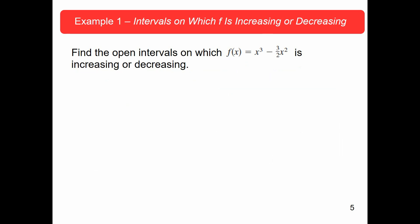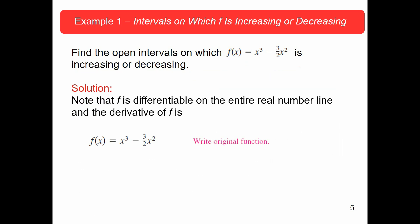What we want to do is find the open intervals on which the function f(x) = x³ − (3/2)x² is increasing or decreasing. Note that f is differentiable on the entire real number line. We can take the derivative and find that f′(x) = 3x² − 3x.